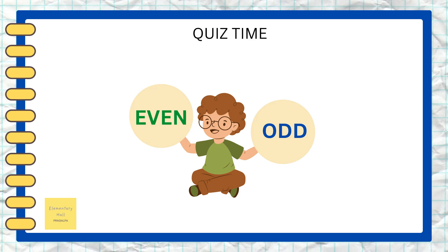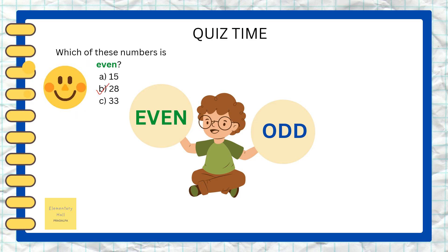Now it's quiz time — a little challenging! Shall we try? Which of these numbers is even: 15, 28, or 33? Think of the ending numbers and check whether it's even or odd. Yes! Number 28 is an even number — it ends with the number 8. Great, good job!